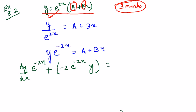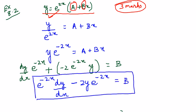On the right hand side when we differentiate, differentiation of A is 0 and only B remains. So let us write this: e power minus 2x dy by dx minus 2y e power minus 2x equals B. This is the equation I have got now.